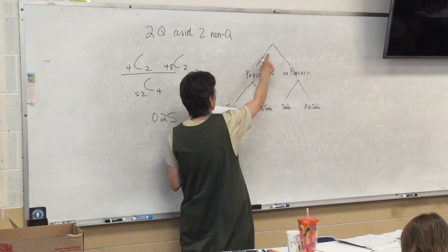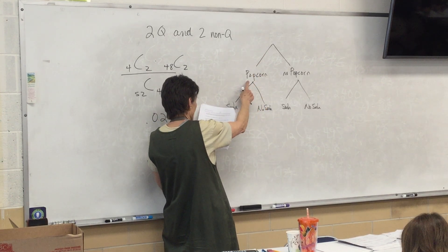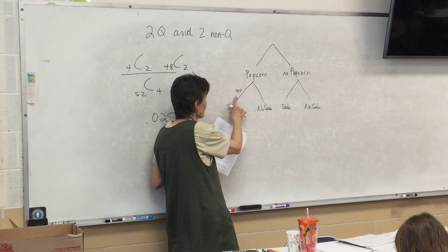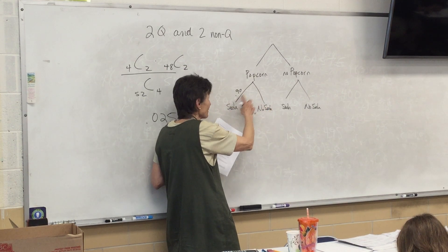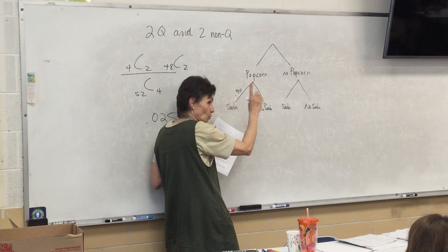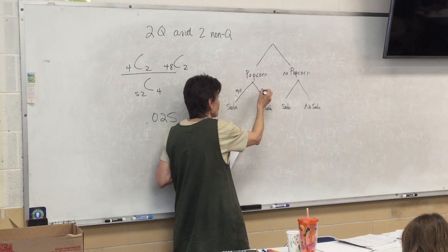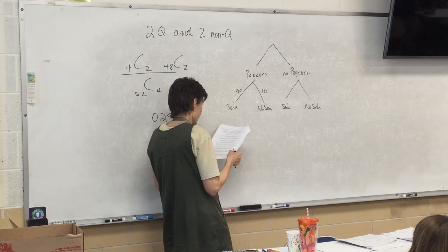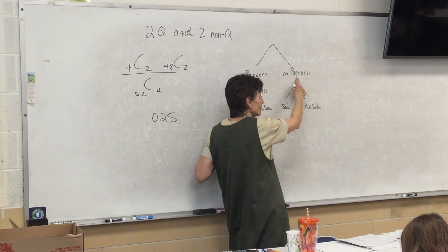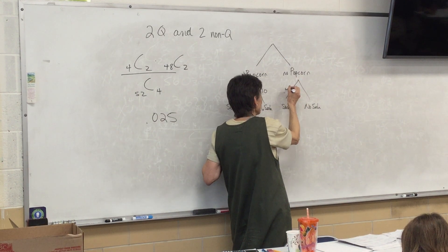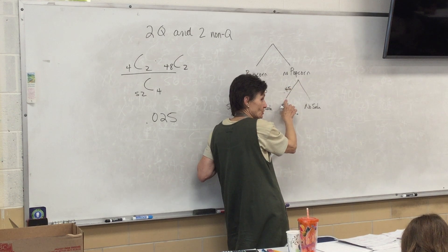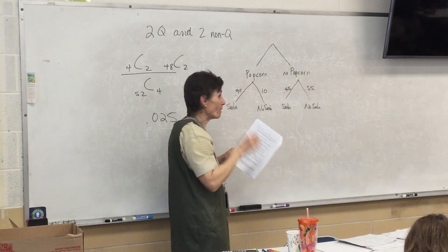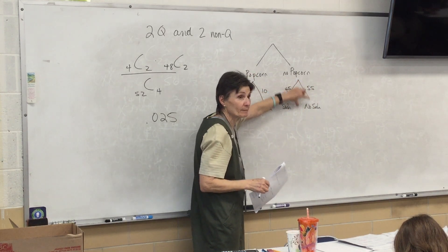If the cafeteria serves popcorn, there's a 90% chance they'll also serve soda. And remember, the V things have to add up to 1. So if you're going to put 0.9 there, you're automatically going to put 0.1 here, right? If they don't serve popcorn, there's a 45% chance they'll serve soda. So this one would be 0.55. Remember, these have to add up to 1. All of them do.